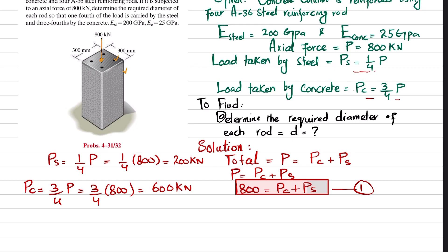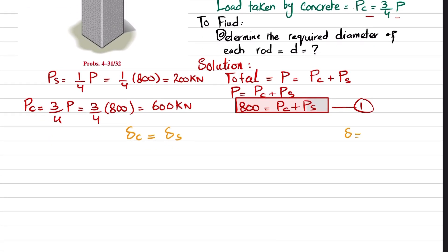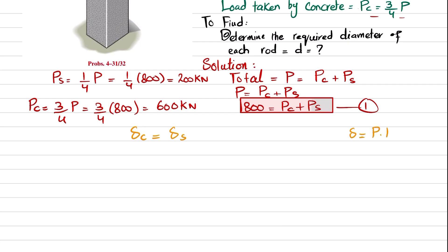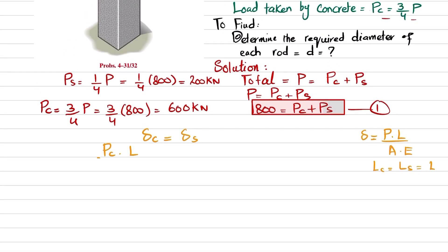Due to this load, the compression (deformation) in the concrete and the reinforcing steel rods will be the same. So δ_c = δ_s. We know that change in length δ = P·L / (A·E). So: Pc·L / (Ac·Ec) = Ps·L / (As·Es).